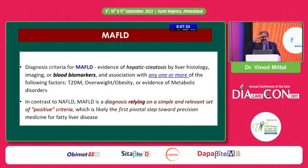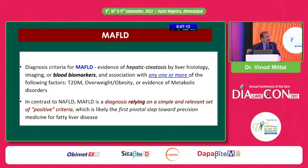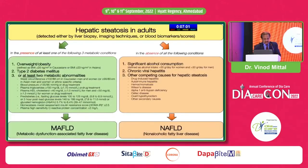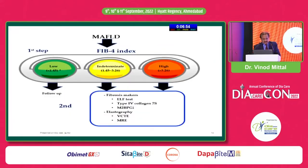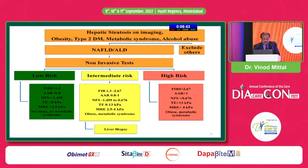On ultrasound showing grade one or two steatosis with slightly elevated SGOT, the presence of diabetes itself makes it MAFLD — or obesity, or any two of the five parameters of metabolic syndrome. This is how in times to come, since treatment must start, we won't need to depend on fibroscan and other tests. MAFLD will ultimately become the diagnosis. For MAFLD, the FIB-4 index cutoffs are 1.45 for low, 1.45 to 3.26 for intermediate, and more than 3.26 for high risk.